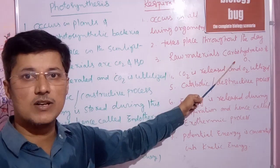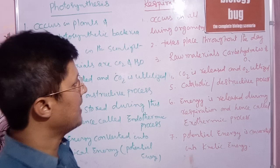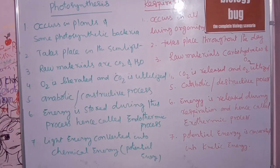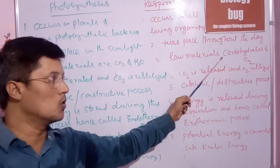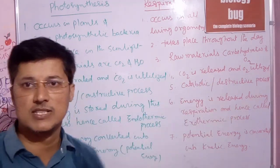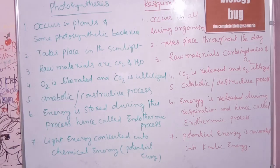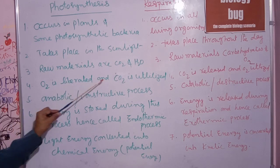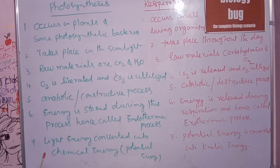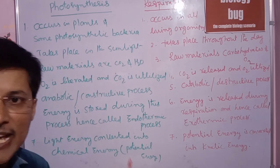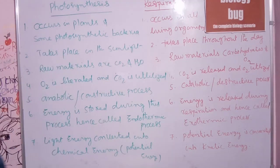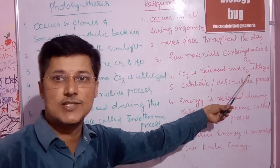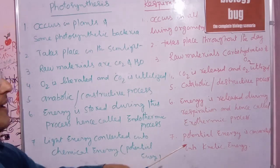The raw materials for respiration are carbohydrates and oxygen. When carbohydrates or glucose combine with oxygen, we get energy. In photosynthesis, O2 is liberated and CO2 is utilized, while in respiration the oxygen is utilized and CO2 is released.